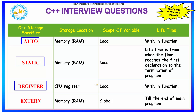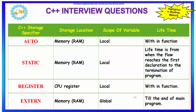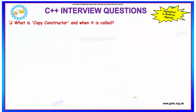For the register storage class, storage is in the CPU register, the scope is local, and the lifetime is within the function. For external, storage is in RAM and the scope is global until the end of the main program — if a value is declared external, it retains its scope till the end of the main program.